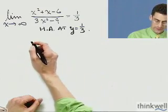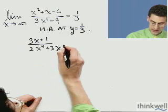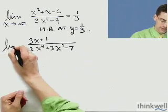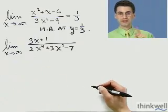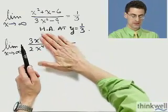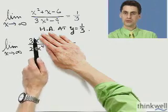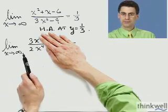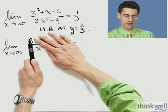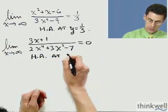Let's find the horizontal asymptotes for 3x plus 1 over 2x to the 4th plus 3x squared minus 7. To find the horizontal asymptote, I take the limit as x goes to infinity and look for the leading term on top and bottom. The leading term in the numerator is just x, and in the denominator it's x to the 4th. I can cancel an x with the x to the 4th, leaving 3 over 2x cubed. As x goes to infinity, the bottom gets larger and larger while the top stays at 3, so the whole thing tumbles down to 0. Therefore, there is a horizontal asymptote at y equals 0.